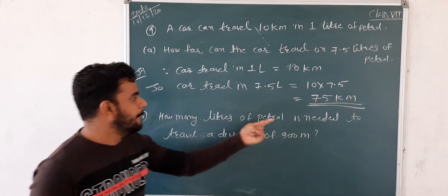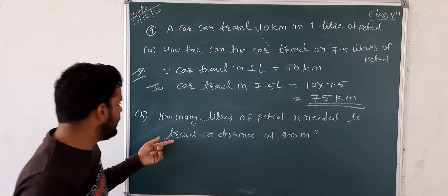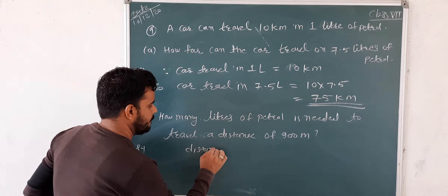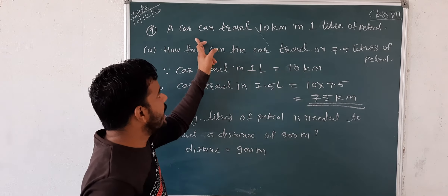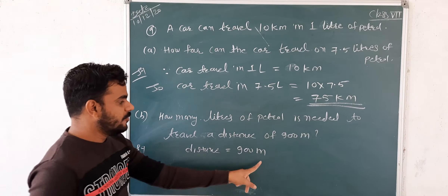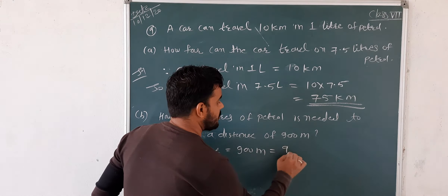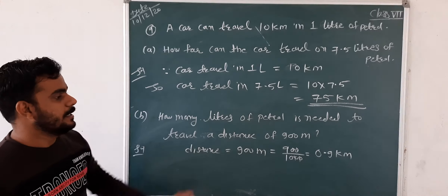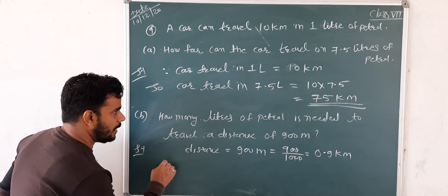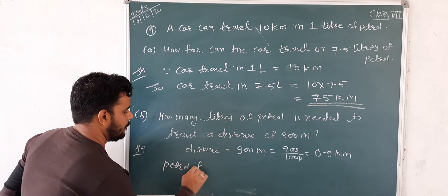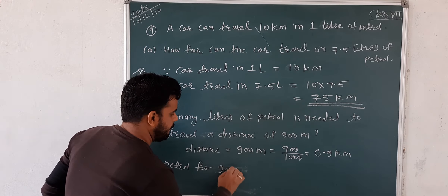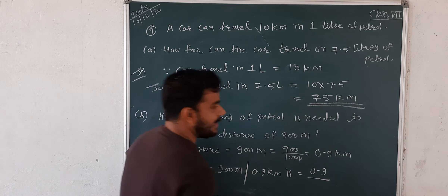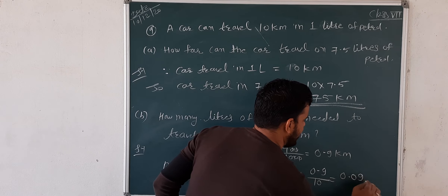The second part of the question: how many litres of petrol are needed to travel 900 meters? The distance is 900 meters. We know the car travels 10 kilometers in 1 litre. So we have to convert 900 meters: 900 divided by 1000 equals 0.9 kilometers. So petrol needed for 0.9 km is 0.9 divided by 10, which equals 0.09 litres.